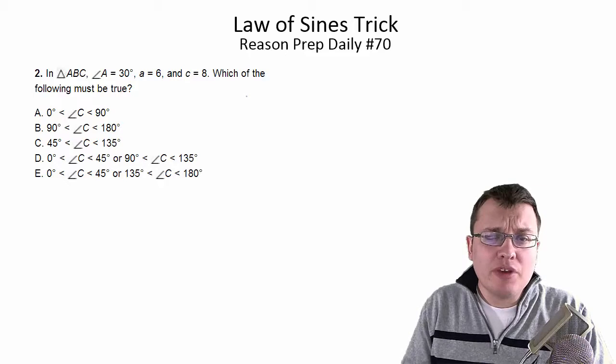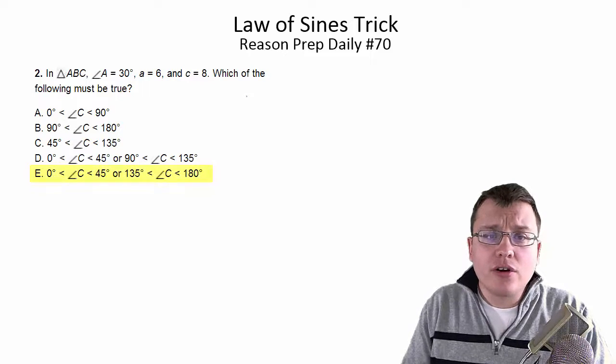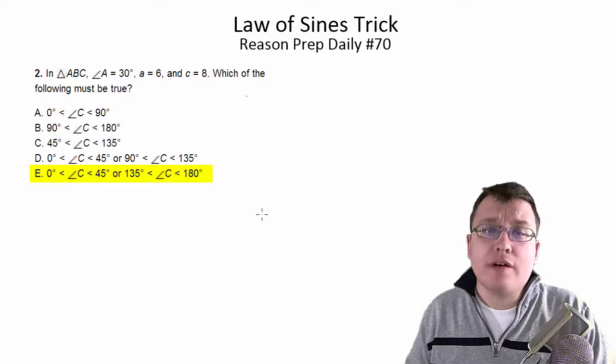In triangle ABC, angle A is 30, side a is 6, and side c is 8. Which of the following must be true?